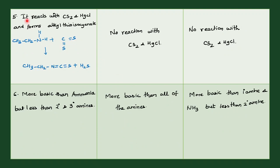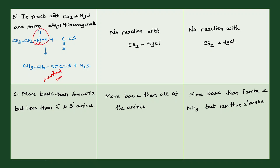The next difference: primary amine reacts with CS2 (carbon disulfide) and HgCl2 (mercury chloride) to form alkyl thioisocyanate. Secondary and tertiary amines react differently with CS2 and HgCl2. This reaction is named the mustard oil reaction.